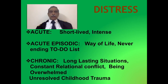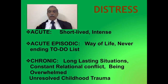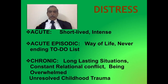Let us discuss some more aspects of distress. Acute distress is short-lived and intense, and different individuals are able to cope up differently. Acute episodic distress is a way of life — people find even day-to-day normal situations very stressful. Chronic stress involves long-lasting situations, constant relational conflict, being overwhelmed, and sometimes past experiences that keep coming back, making things feel generally stressful all the time.